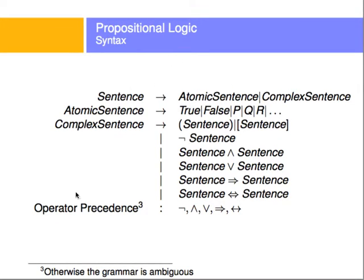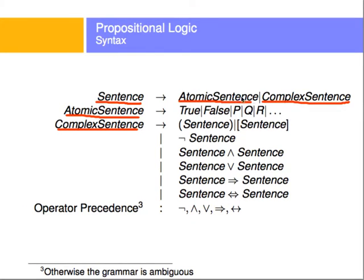In this syntax, on the left you have symbols called non-terminals — like 'sentence', for example. 'Sentence' is just a symbol; it could have been called S or anything else. These non-terminals can be expanded into other symbols. For example, a sentence can be expanded into an atomic sentence or a complex sentence. This single line for the non-terminal 'sentence' is called a production rule.